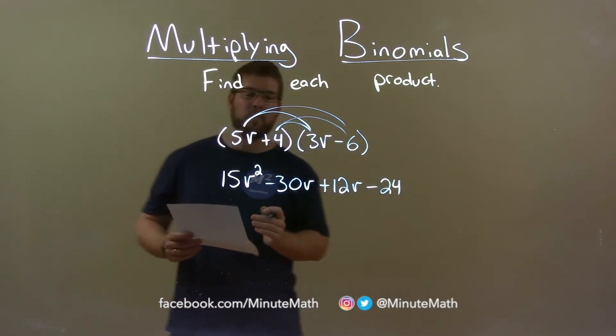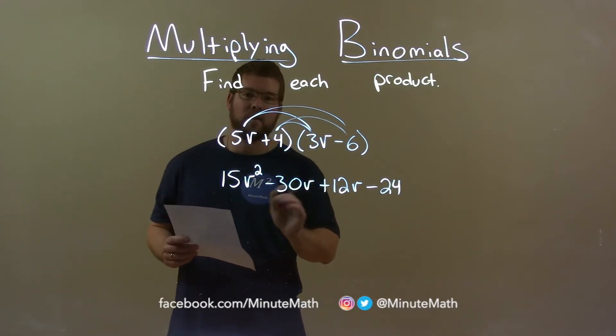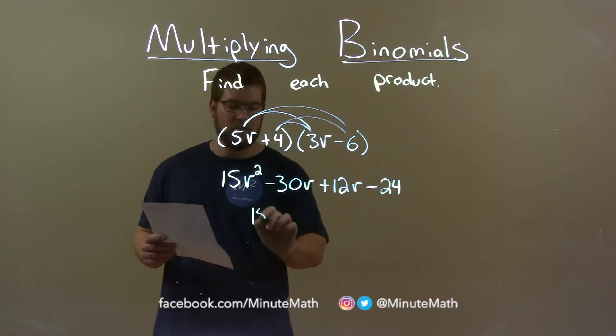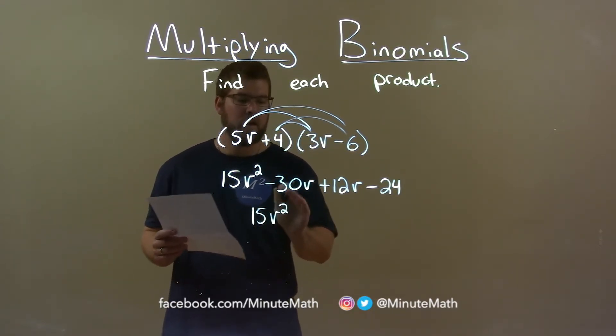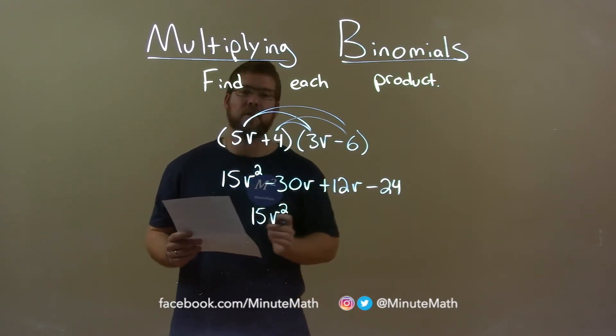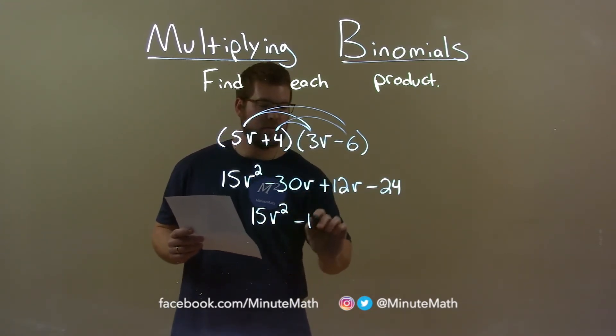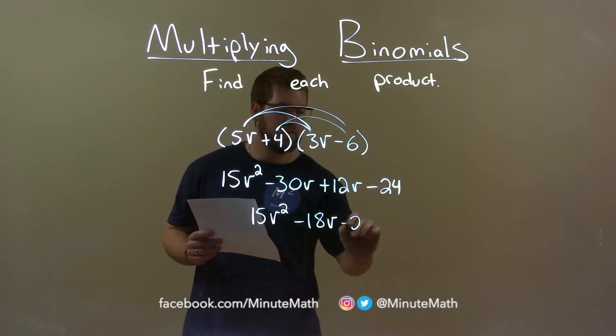We now want to combine our like terms, which is just the ones with a V. We bring down 15V squared and minus 30V plus 12V is minus 18V. Bring down the minus 24.